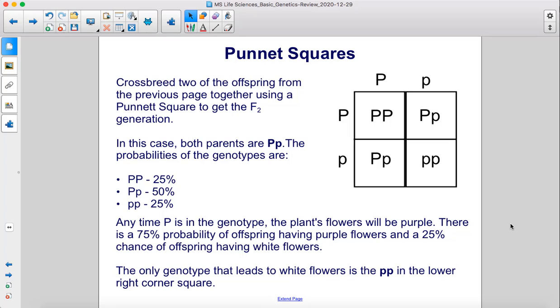Crossbreed two of the offspring from the previous page together using a Punnett Square to get the F2 generation. In this case, both parents are one capital P, one lowercase p.